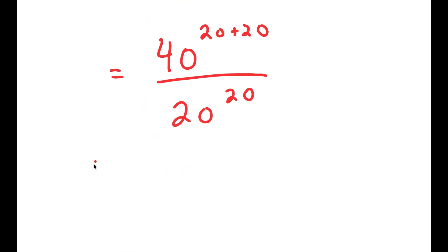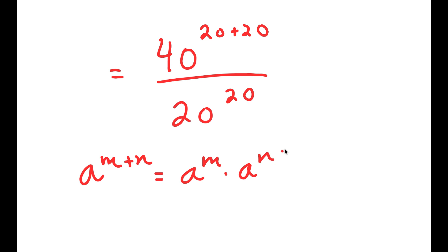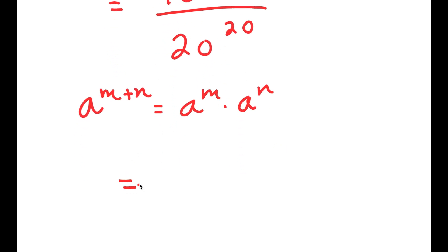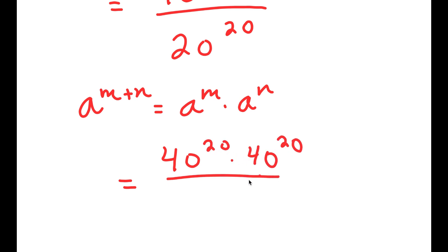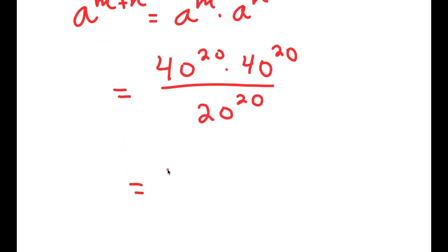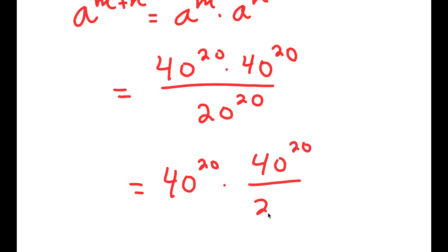And if I have something in the form a to the power of m plus n, this is equal to a to the power of m times a to the power of n. So 40 to the power of 20 plus 20 is going to equal 40 to the power of 20 times 40 to the power of 20. Now I have this over 20 to the power of 20. This is the same thing as 40 to the power of 20 times 40 to the power of 20 over 20 to the power of 20.